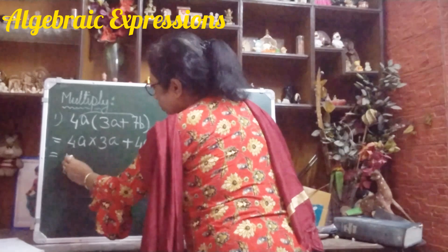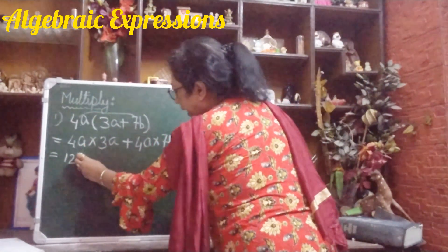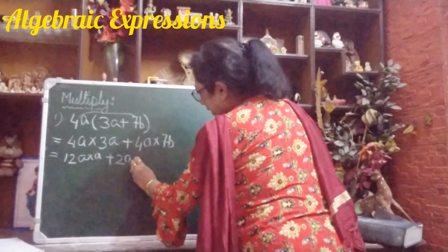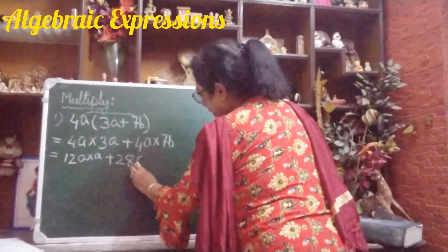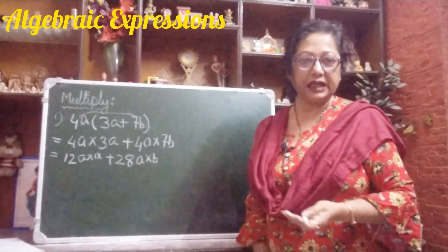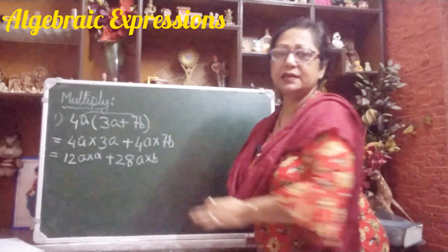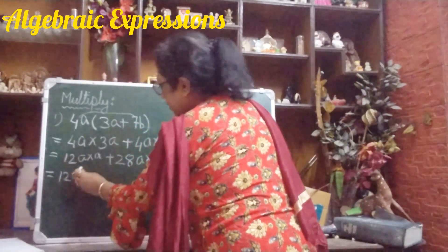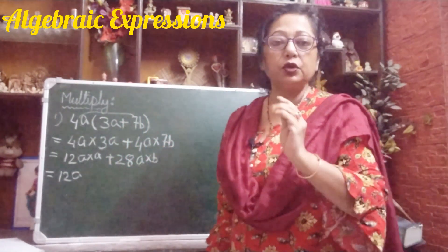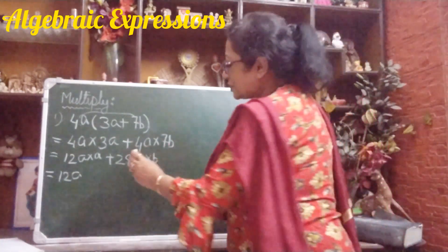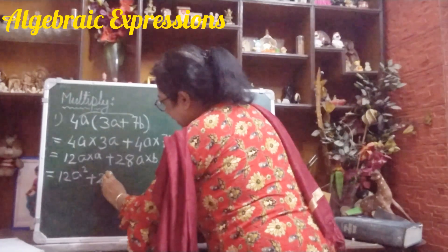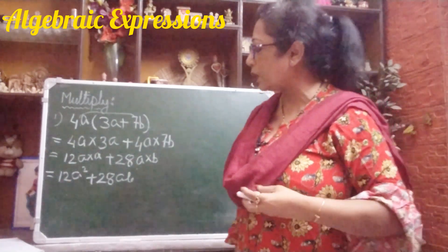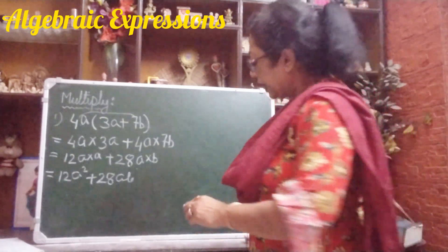Now, 4 times 3 is 12, and a into a gives us a squared. Then 4 times 7 is 28, and a into b gives us ab. You also know exponents — a into a means a to the power 1 plus 1, which is a squared. So the answer is 12a squared plus 28ab.